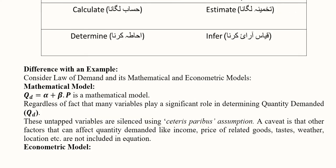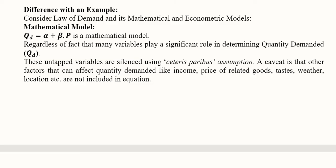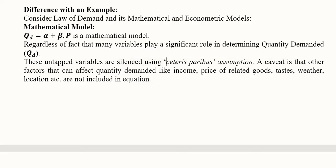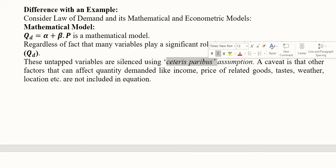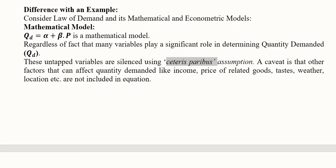Let us take an example: the law of demand. Here we express it in a mathematical equation where beta is the slope, P is the price, alpha is the intercept or constant, and the dependent variable is quantity demanded (Qd). It is a mathematical model because no error term is included, and regardless of the fact that many other variables play a significant role in determining Qd, we are overlooking them and not including those variables — applying the ceteris paribus assumption that other factors are held constant.